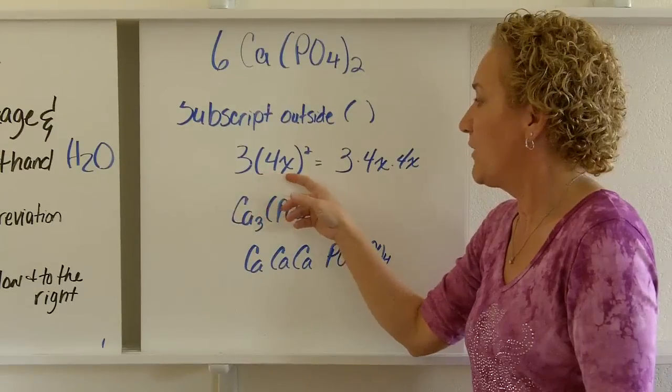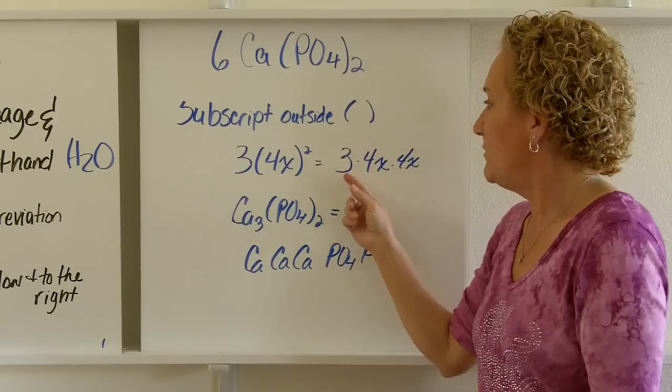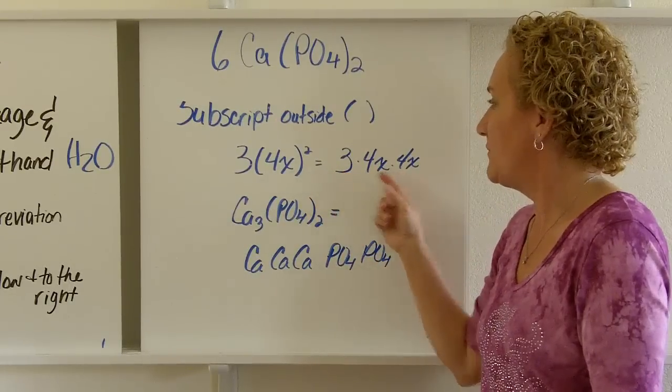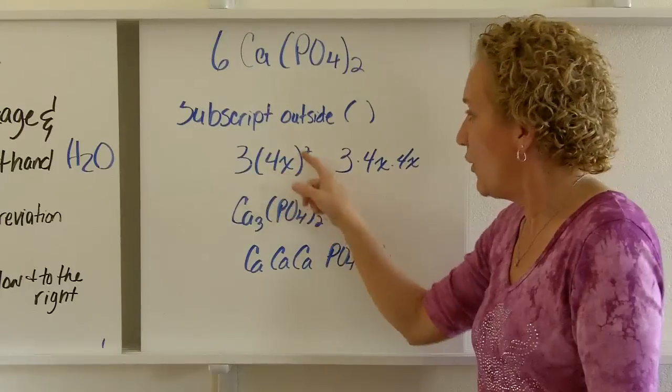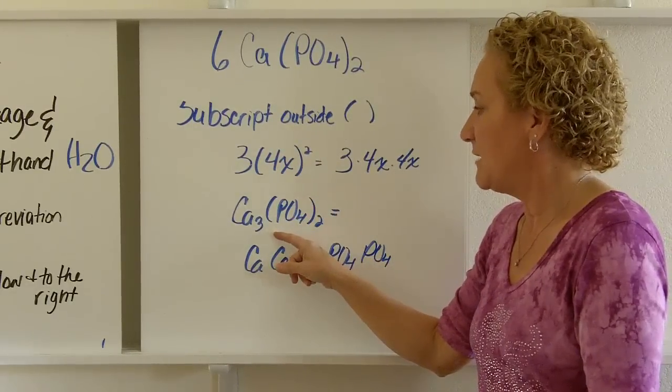If I had 3 times (4x)² and the 4x was in parentheses and the square was outside, that would mean it would be 3 times 4x times 4x. So the square works on everything inside the parentheses. And so it is with a subscript.